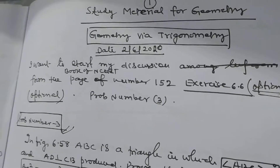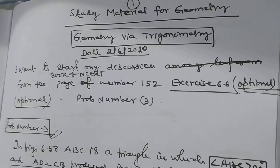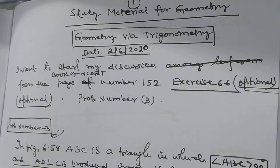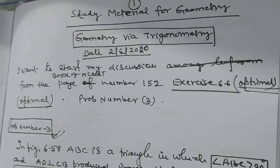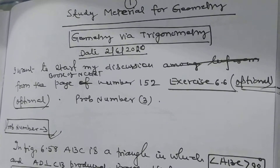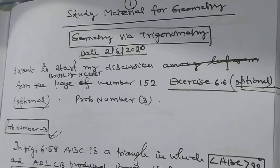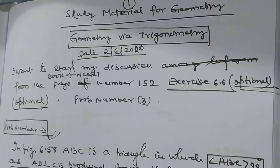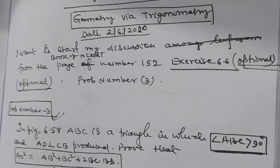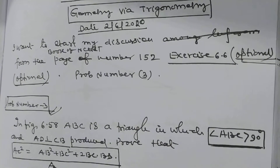My dear students, today in this video I want to discuss the problems of exercise 6.6. Though this problem is in exercise 6.6, it is very very important for the purpose of examination and other examinations also. These problems are known as acute angle triangle or obtuse angle triangle — Apollonius' theorem. I will discuss one by one.